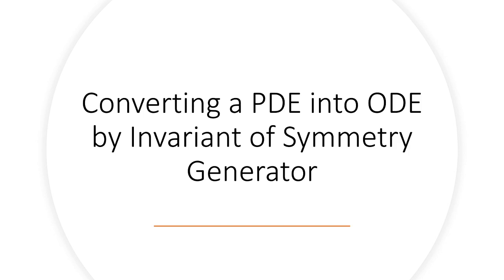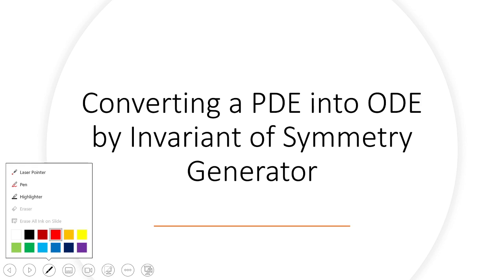In this video we are going to convert a PDE into a DE by invariant of a symmetry generator. So we start with a partial differential equation. Take the differential equation UT minus UXX plus UX square equal to zero. This is a PDE where U is a function of T and X.